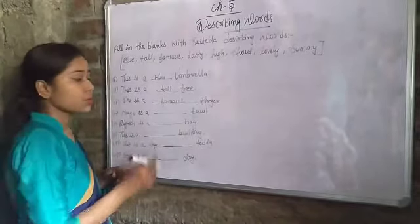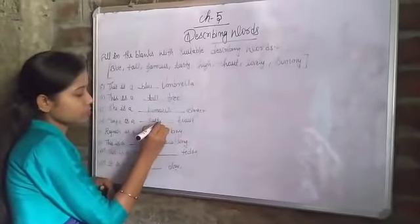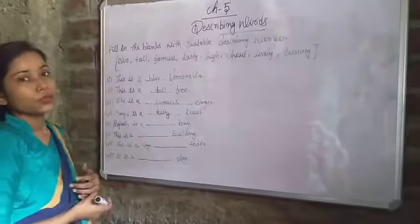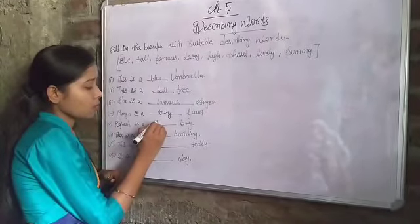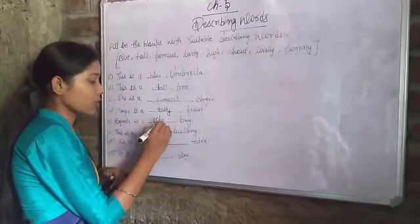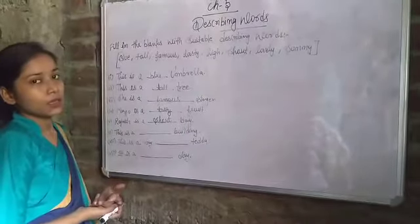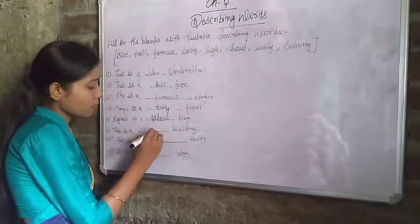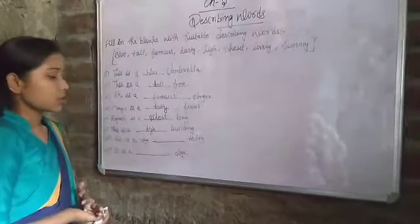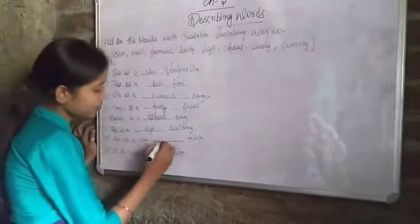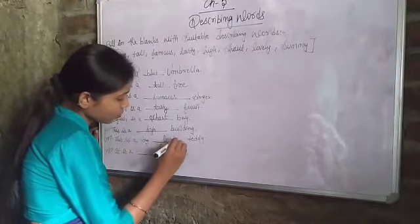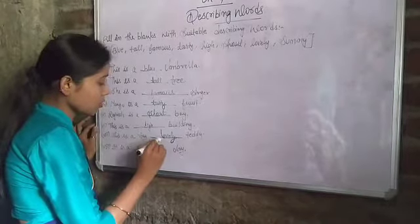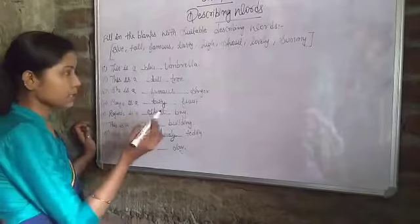Mango is a blank fruit — mango is a tasty fruit. Rajneesh is a blank boy — a short boy. This is a blank building — this is a high building. And the last one — it is a blank day — it is a sunny day.